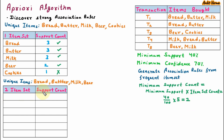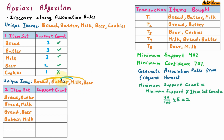Now we are taking the 2-itemset and support count. A 2-itemset means two items together. From the four remaining unique items — bread, butter, milk, and beer — we are going to generate all sets of 2 items. There are six possible combinations.